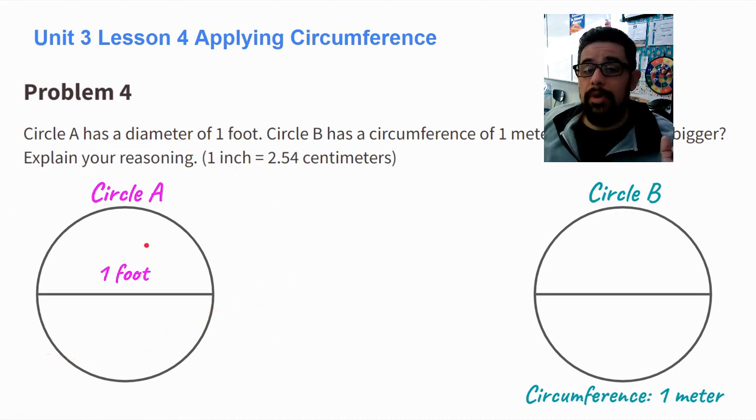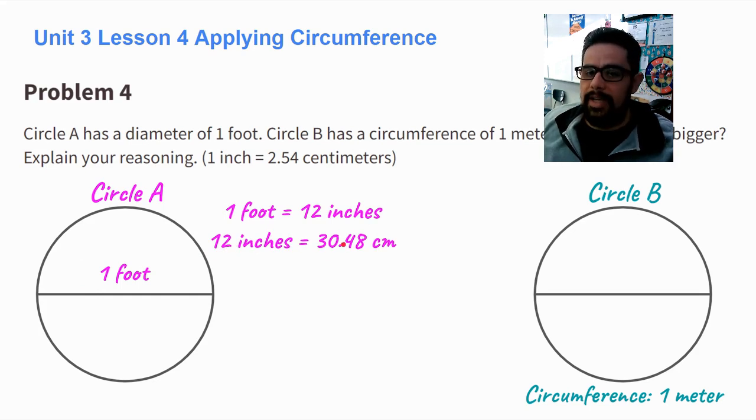So we're going to start with circle A and we're going to calculate how many centimeters this is. Circle A, 1 foot is 12 inches. 12 inches is equal to 30.48 centimeters. So the diameter is 30.48 centimeters.